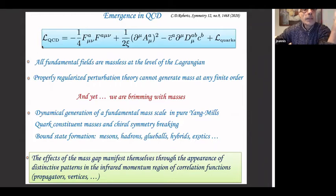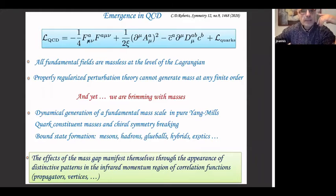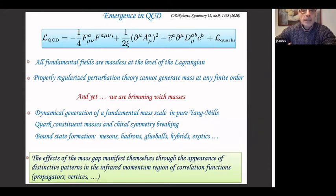At the level of QCD, that means one starts out with the QCD Lagrangian. Here I have written explicitly the part related to the gauge sector — pure Yang-Mills. This is the typical term related to the field tensor, this is the gauge-fixing parameter, this is the gauge sector, and then of course to make it QCD you have to add the quarks. I will be talking mostly about pure Yang-Mills, but we have to make this clear distinction.